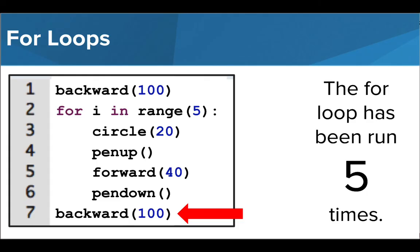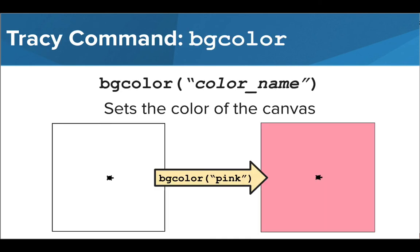Before we look at an example in the editor, let's learn one new command. The BGColor command can be used to change the color of the canvas Tracy is drawing on. To use this command, we write BGColor, which stands for background color, and inside parentheses we enter a color name inside quotation marks.